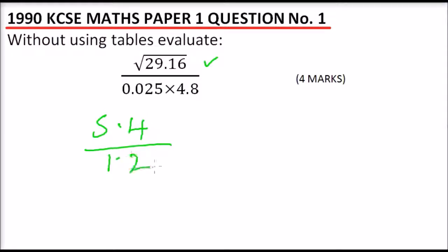So we have 5.4 divide by 12. And when you divide that, you divide by 12, you get—it is 45.